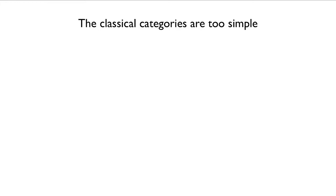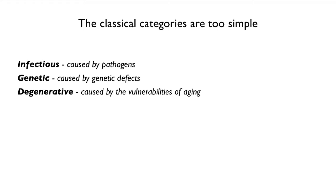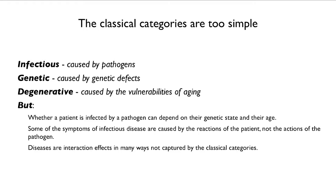The classical categories of disease are too simple. Infectious disease is caused by a pathogen — that's Pasteur's great insight. Genetic disease is caused by some genetic defect, and degenerative diseases are caused by the vulnerabilities of aging. That all sounds good, but it's rather superficial, because whether a patient is infected by a pathogen will depend on their genetic state and their age. Some symptoms of infectious disease are caused by the reactions of the patient, not by the actions of the pathogen, and diseases are interaction effects in many ways not captured by these categories.